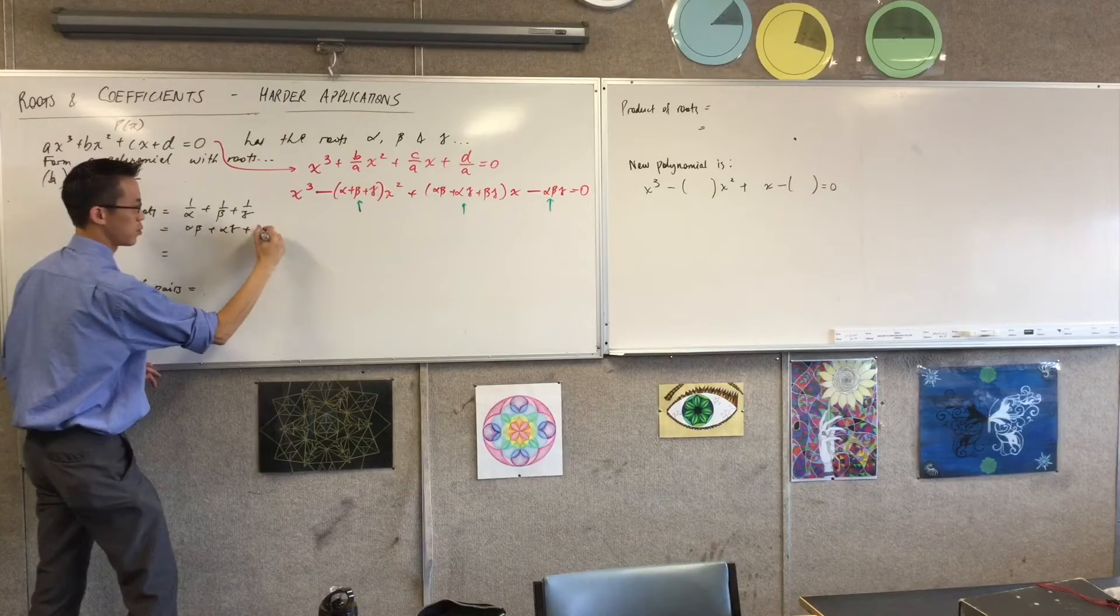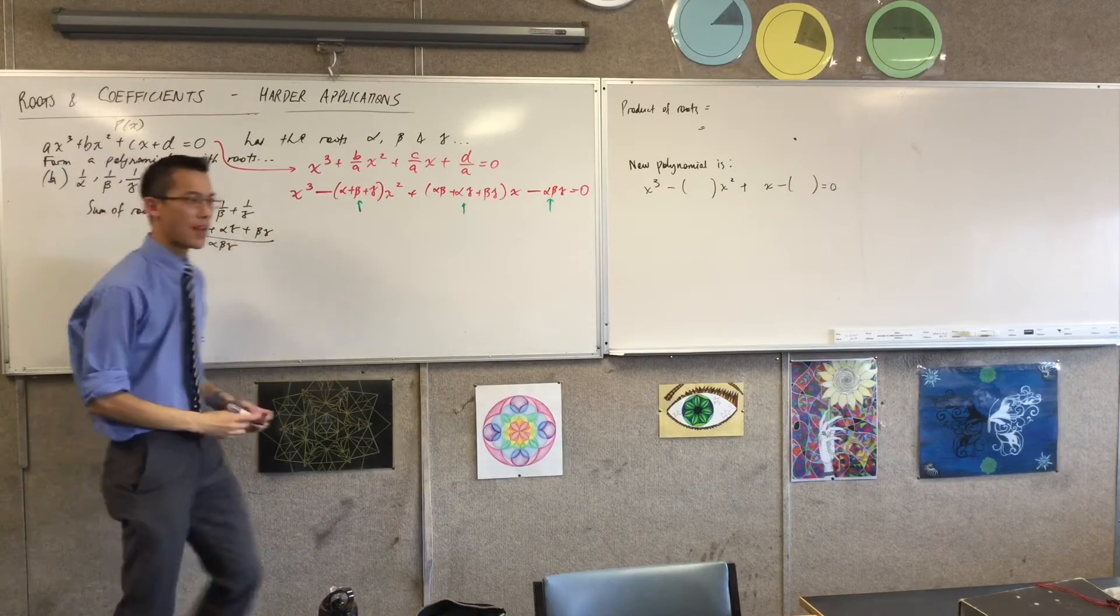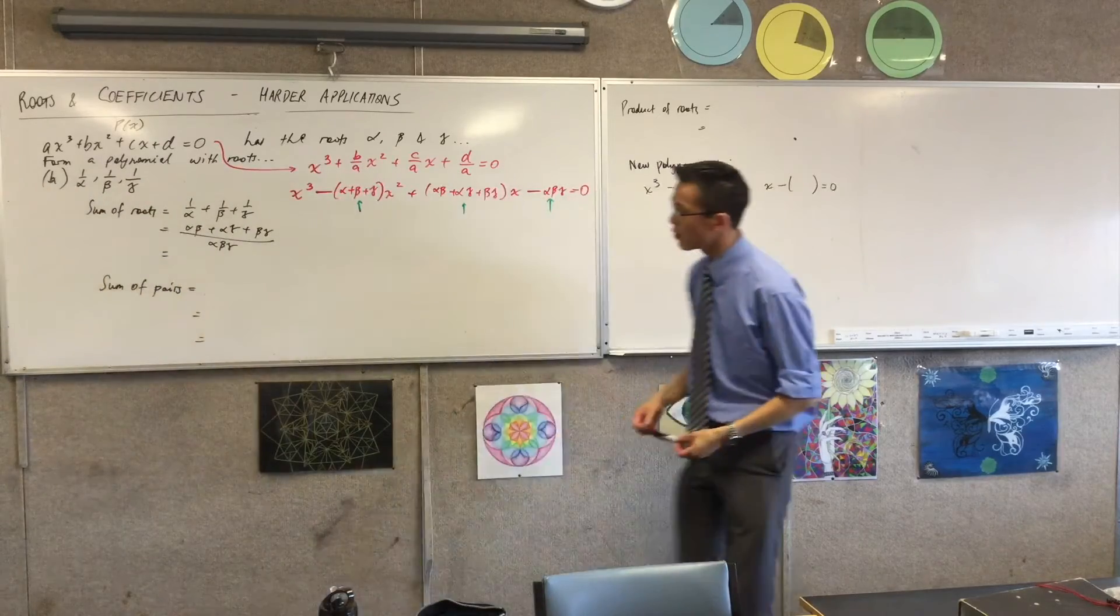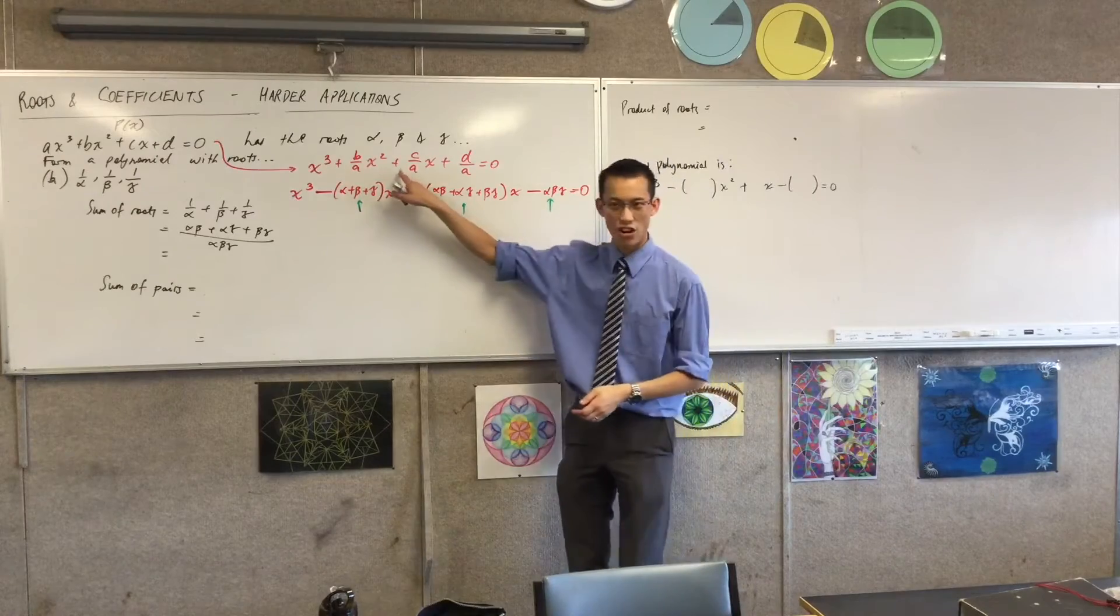And then your last one gives you one on alpha. Once you divide through by alpha beta gamma. However, you notice that the sum of roots two at a time in pairs is C on A.